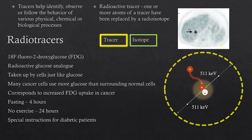The most common radiotracer in use for clinical oncology is F18-fluoro-2-deoxyglucose, or FDG. This is a radioactive glucose analogue, and is typically taken up by cells just like glucose. Many cancer cells take up a lot of glucose relative to the surrounding normal cells, and this results in greater uptake of the isotope in the cancer cells compared to the normal cells, as you can see here.